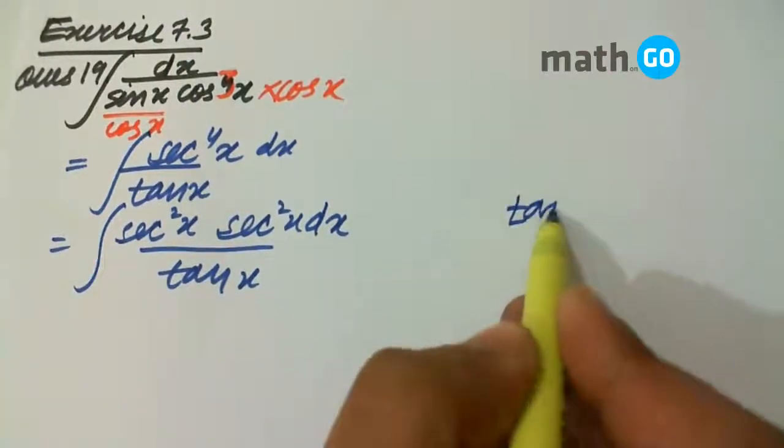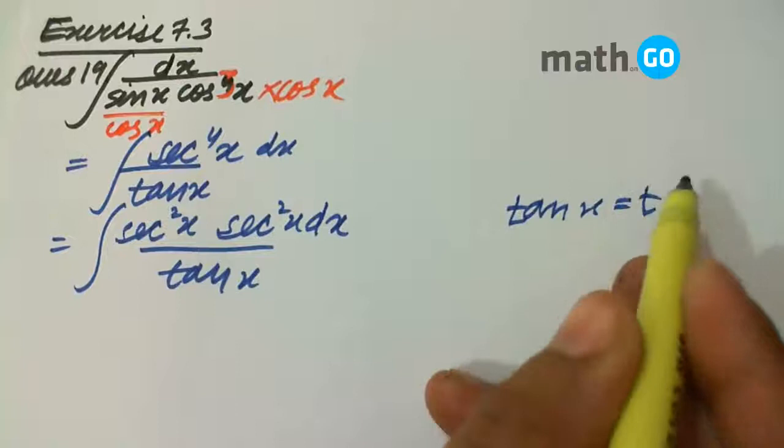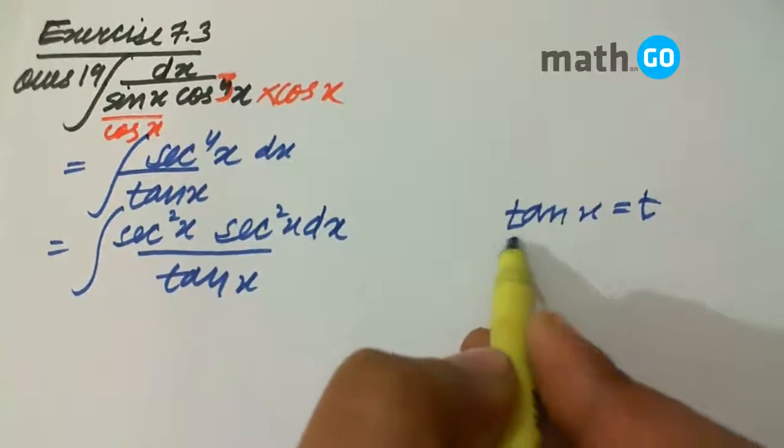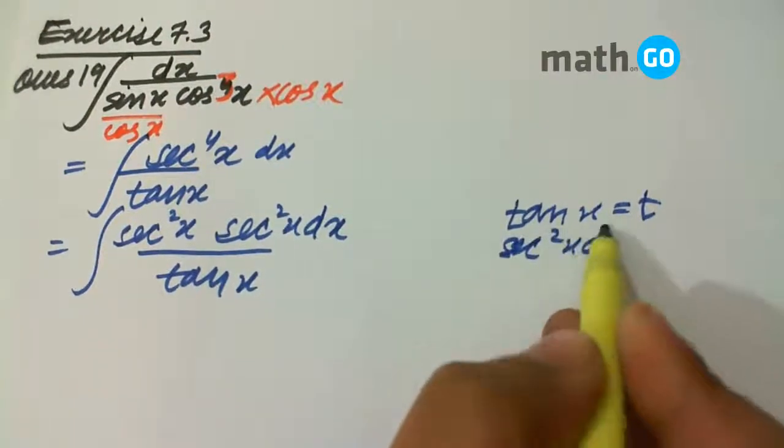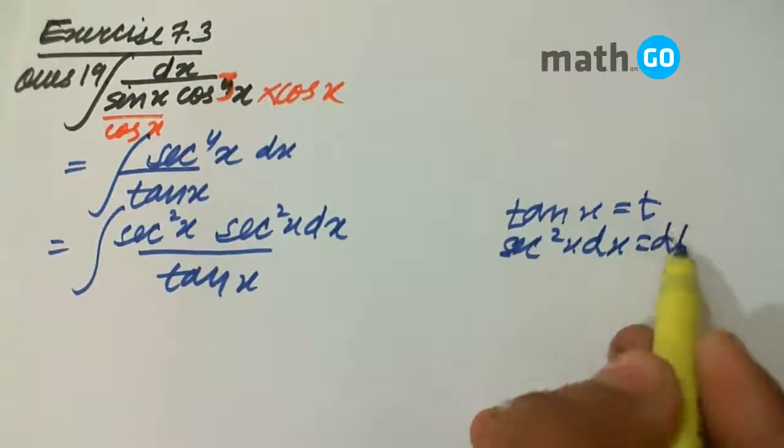So if we keep tan x equals to t, we will have sec square x dx equals to dt. So it is dt upon t.